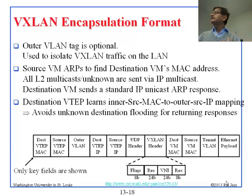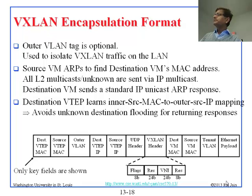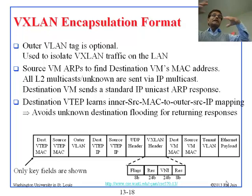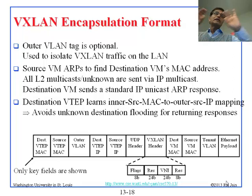The source VM needs to find the destination VM's MAC address, and all L2 multicast and unknown traffic is sent by IP multicast. Before you can talk to anybody, you have to know their MAC address, and for that you use the ARP protocol — the address resolution protocol. ARP is a broadcast: it goes to everybody asking who knows the MAC address of this IP address. All broadcast, unknown, and multicast traffic is done by IP multicast, which is where those three multicast tunnels not shown in the diagram are needed.